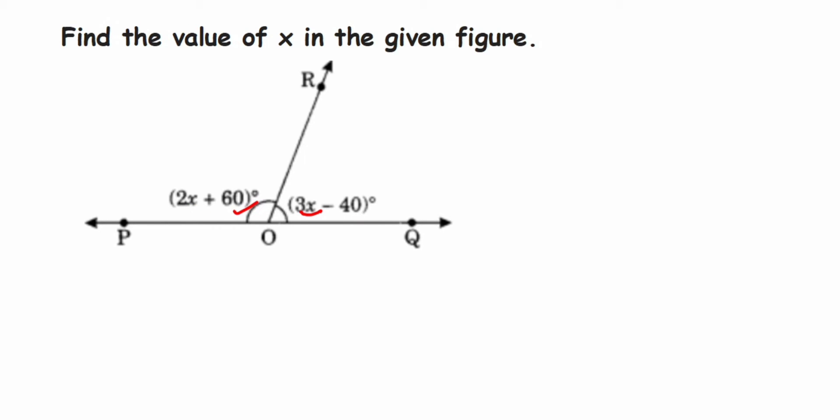That is PQ. So whenever angles lie on a straight line, the sum of the angles will always be equal to 180 degrees. That is they're a linear pair.